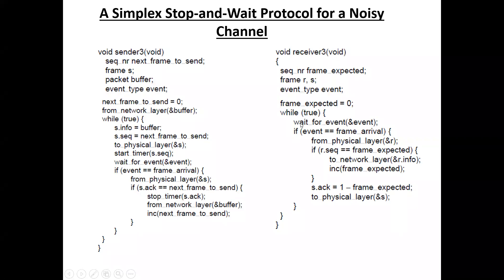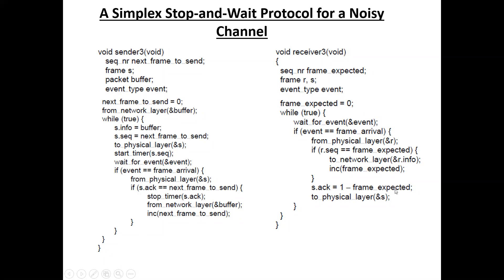At the receiver side, the receiver waits for an event — meaning it waits for a frame from the sender. Once the frame arrives, it sends the frame from the physical layer to the network layer and increments frame_expected. The acknowledgement is set as: s.ack = 1 - frame_expected. Initially frame_expected equals zero; after receiving frame zero, frame_expected becomes one, and the acknowledgement sent is 1 - 1 = 0, so s.ack = 0. The acknowledgement is then sent to the physical layer.